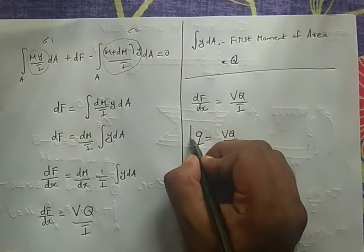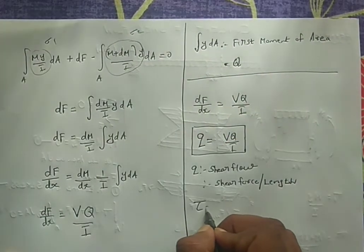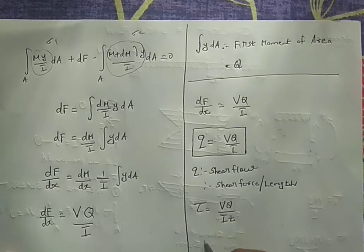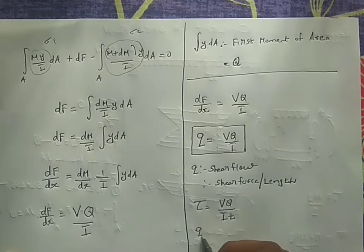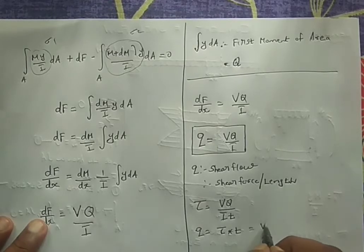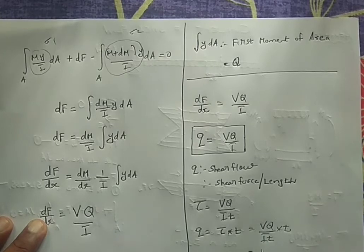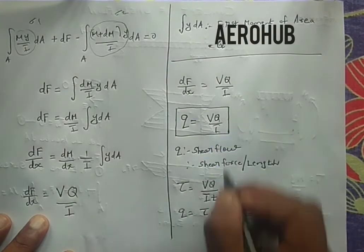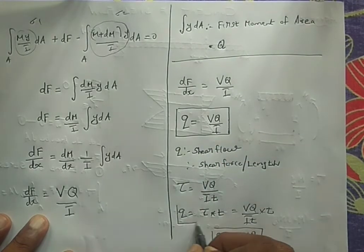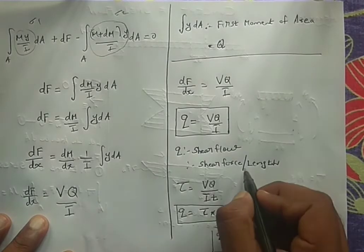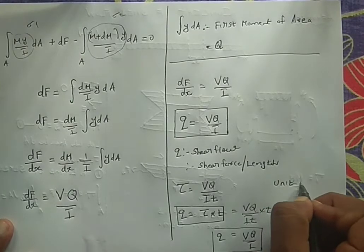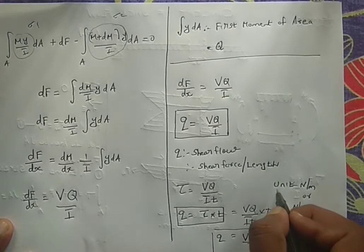Shear flow q = τ · T, and also q = VQ / I. The general definition: shear flow is shear force per unit length, with units of Newton per meter or Newton per millimeter. So there are two equivalent definitions: shear flow equals shear stress times thickness, and shear flow equals shear force per unit length.